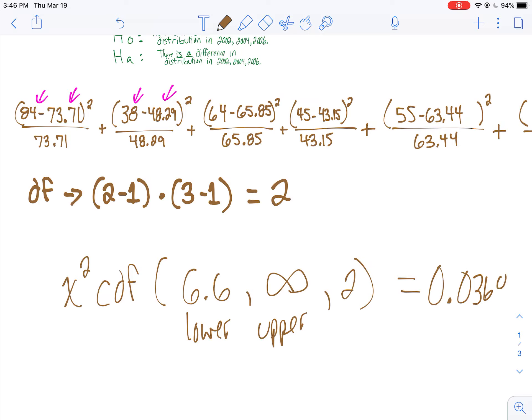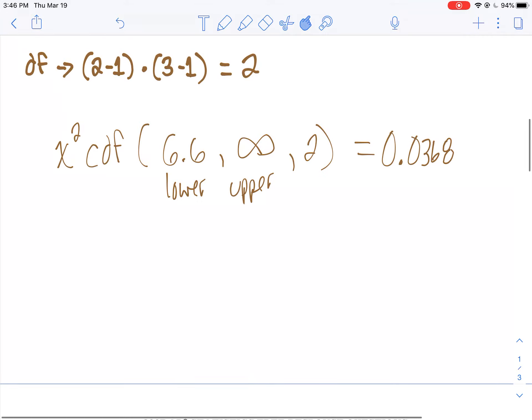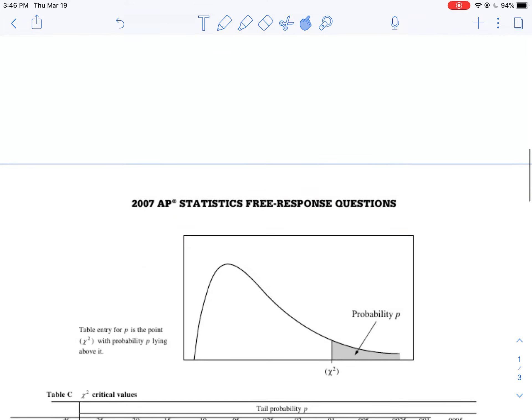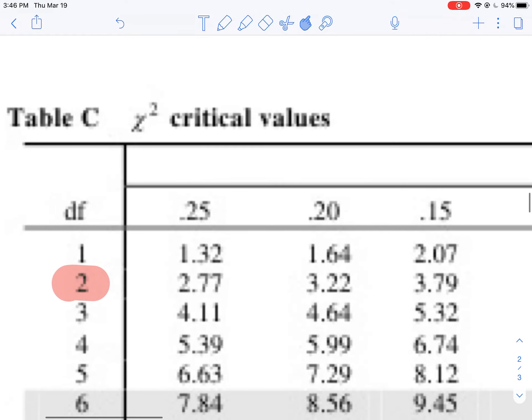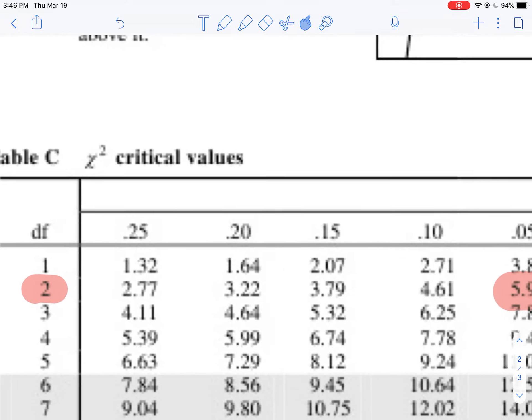Now, we need to establish a significance level, but if it's not established, always go with 0.05. Now, I can also use the table. Here's what I did. I used the table here. I looked for my degrees of freedom of 2, and I looked for my chi-square statistic in here.